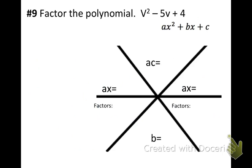And now let's look at number 9. So we're going to factor v squared, and that's a 1v squared, which is our a value, minus 5v. So our b value is negative 5, and c is 4. So 1 times 4 is 4, and then our b value is negative 5.